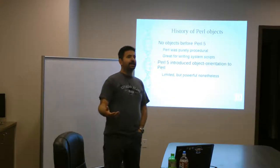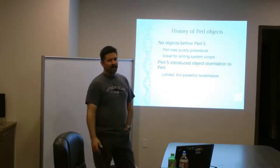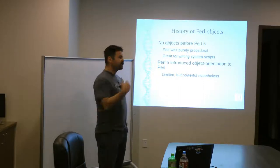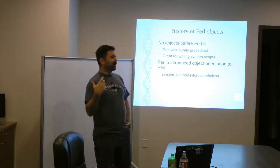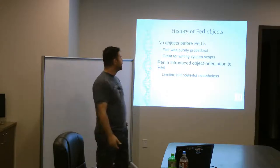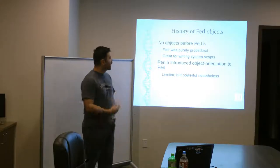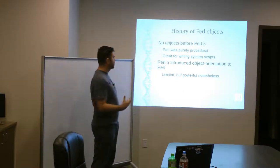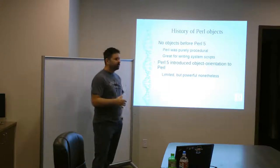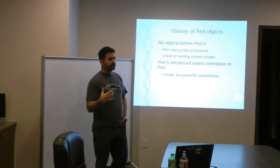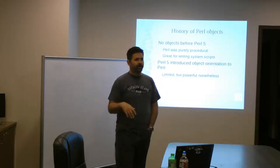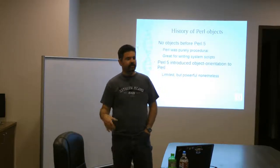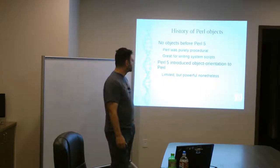So, from 87 until about 96, there was no object orientation in there, and that was great for what people were doing with it, which was string processing, system administration scripts, that sort of thing. But Perl 5 introduced a very simple way of doing objects. It was limited, but powerful enough that people could start using concepts that they'd been hearing about from C++ and starting to hear about with Java and some other object-oriented languages.